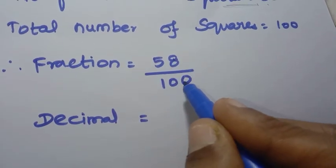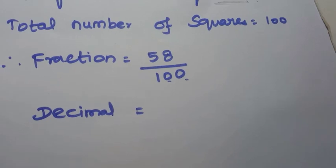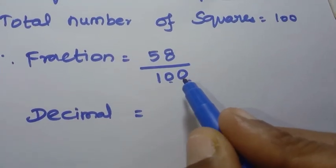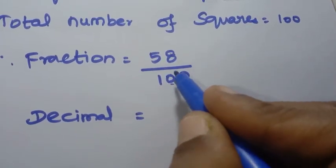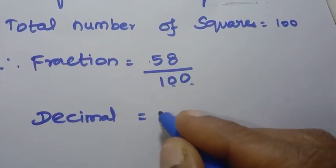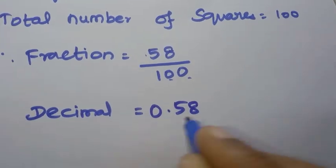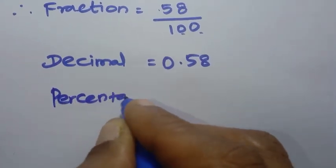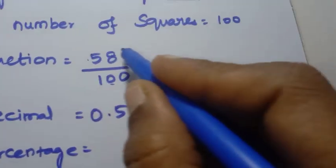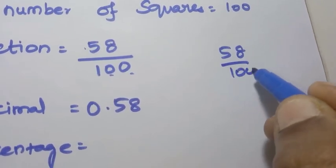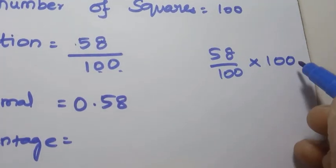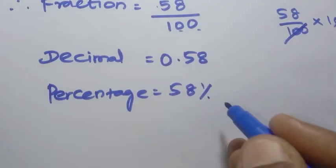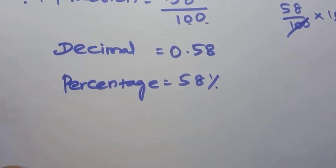Fraction = 58/100. For decimal, dividing by 100 moves two decimal places, so decimal = 0.58. For percentage: 58/100 × 100 — the 100s cancel — so the percentage is 58%.